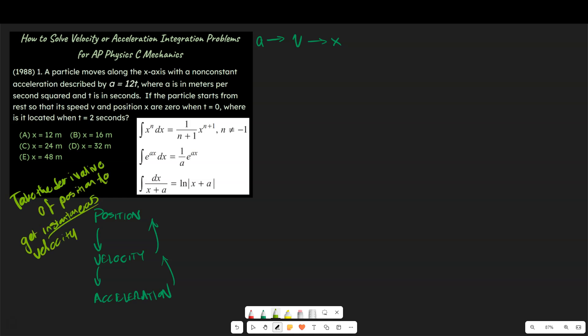In general, you could take the derivative of a position function with respect to time to get instantaneous velocity, and you could take the derivative of dv dt to get instantaneous acceleration. So just a quick summary here.